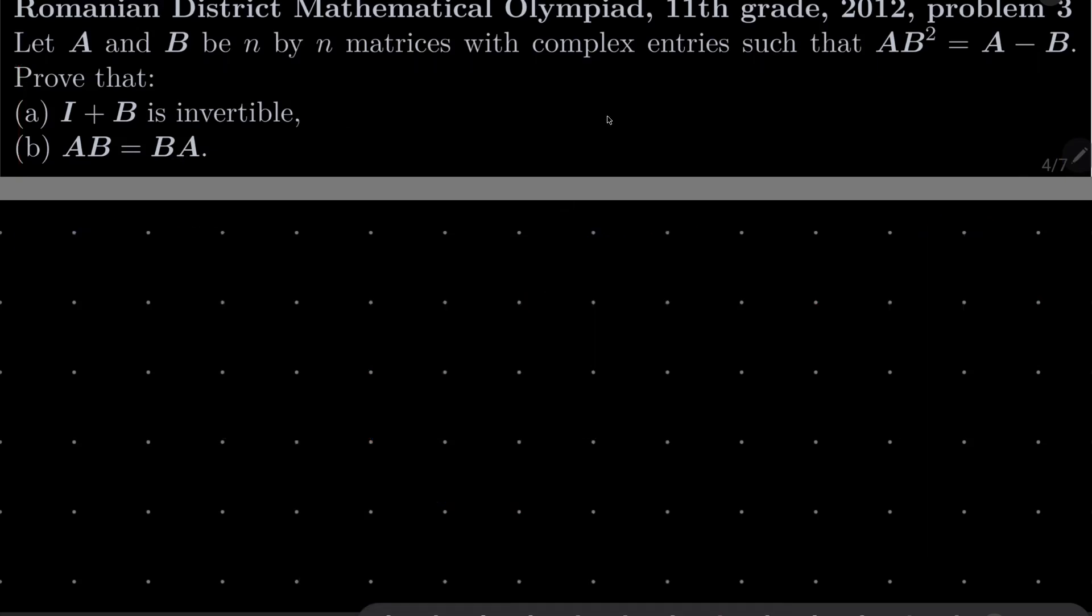Alright, so let's start with part A. We wish to prove that I plus B is invertible. So suppose that I plus B times some vector is a zero vector, which means that B times some vector equals minus V.